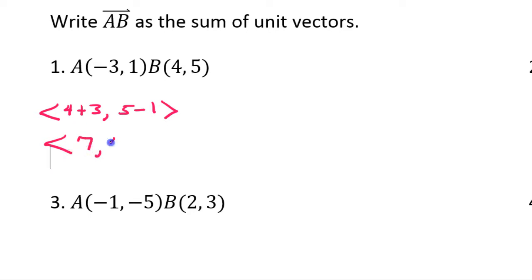So, this would be 7 comma 4. I did 4 plus 3 because I did minus a negative. Minus a negative is addition. So, this would be component form. Now in unit vector form, this would simply be 7i plus 4j. It's as simple as that.